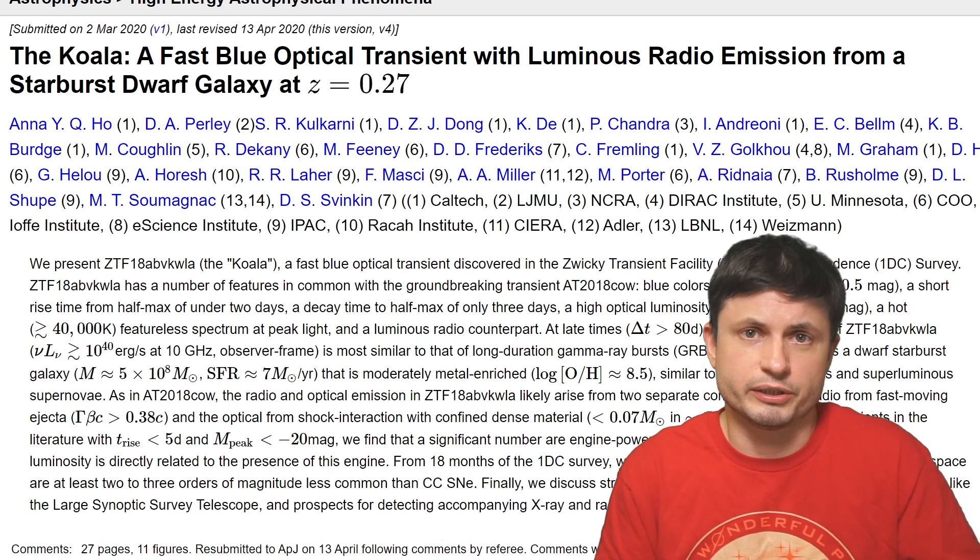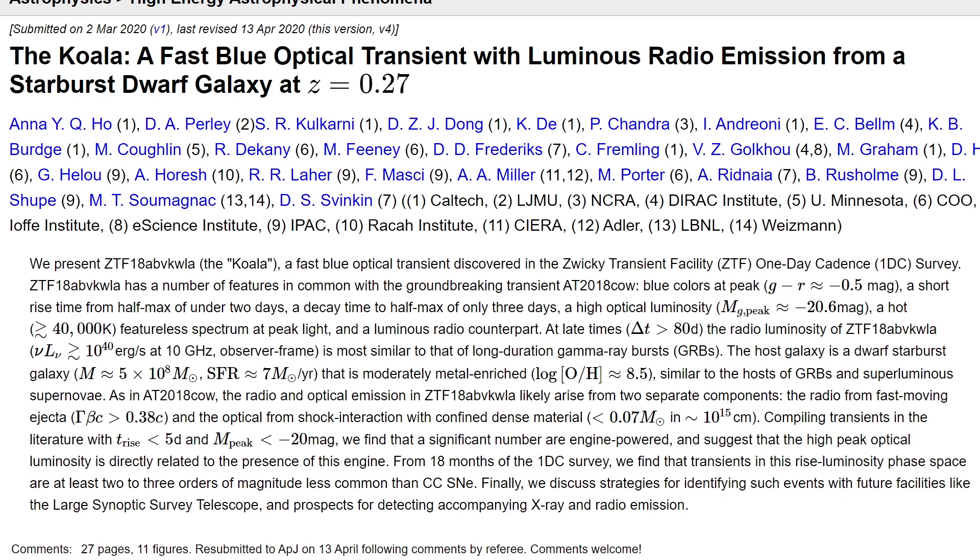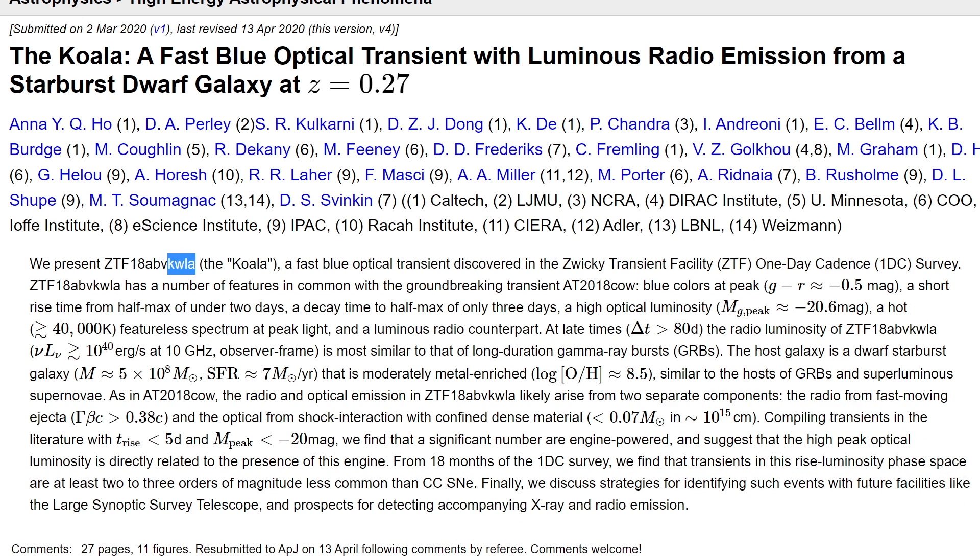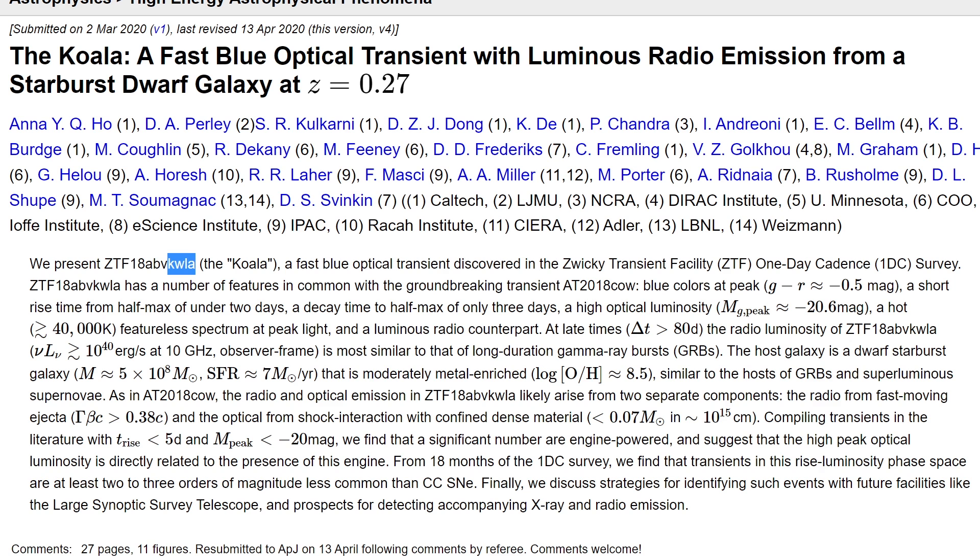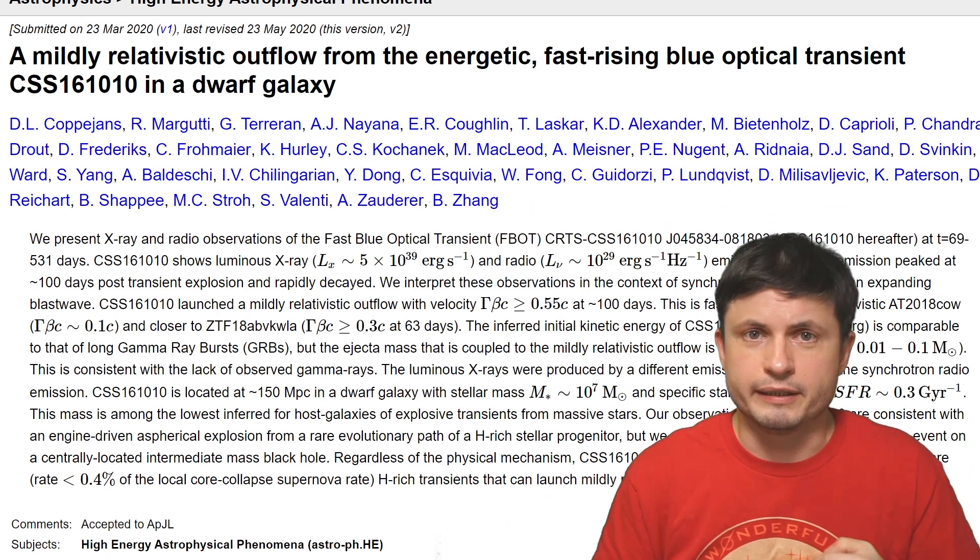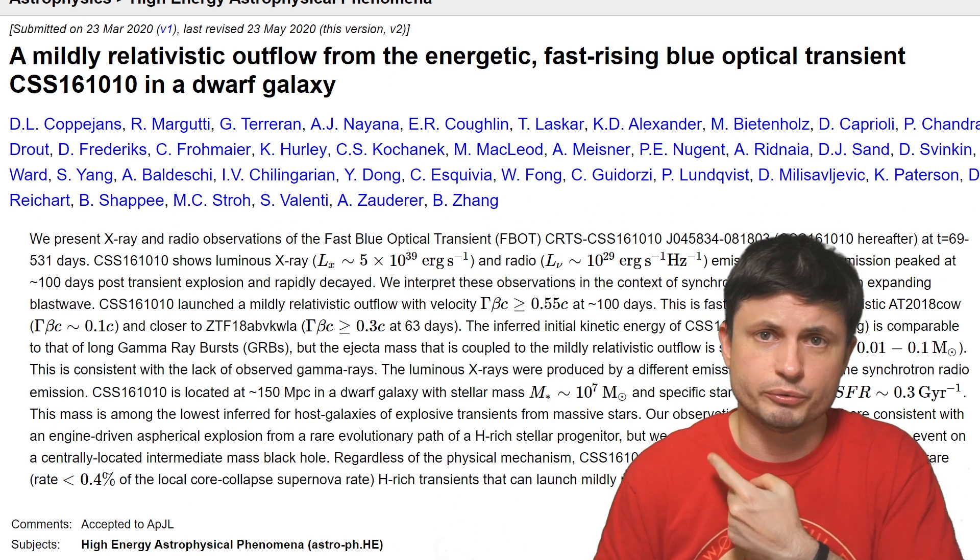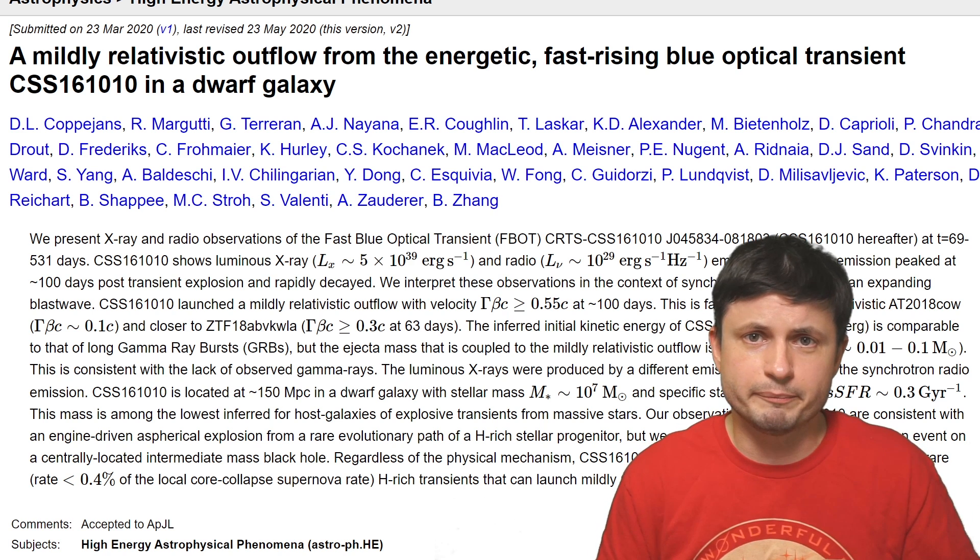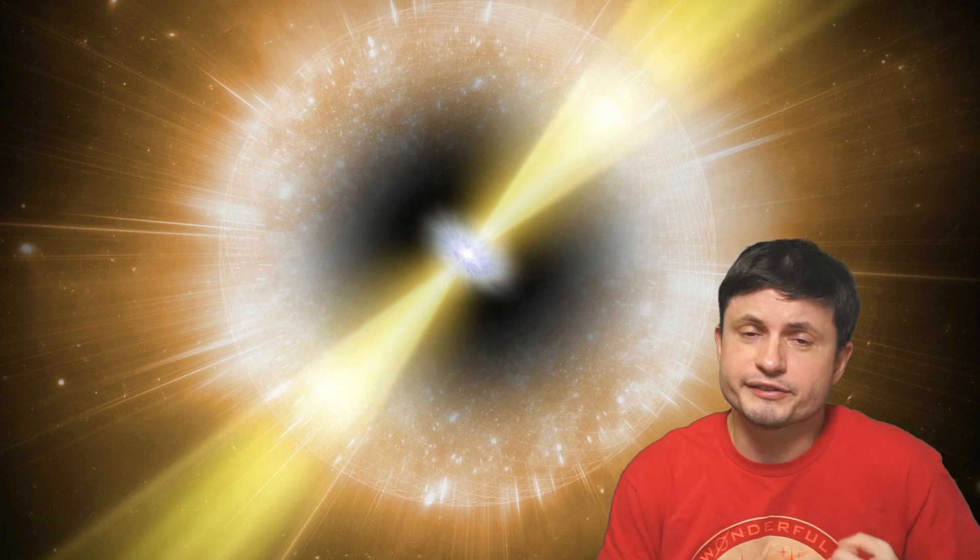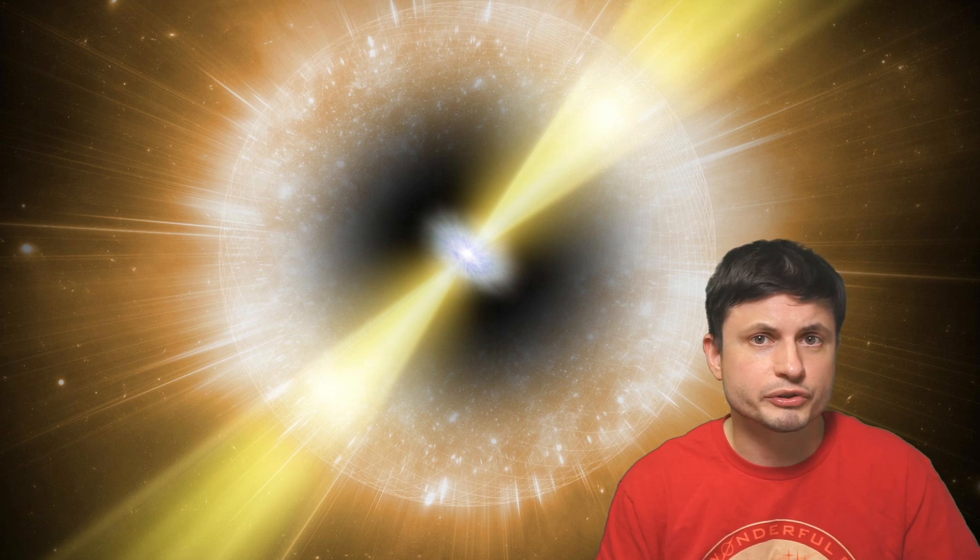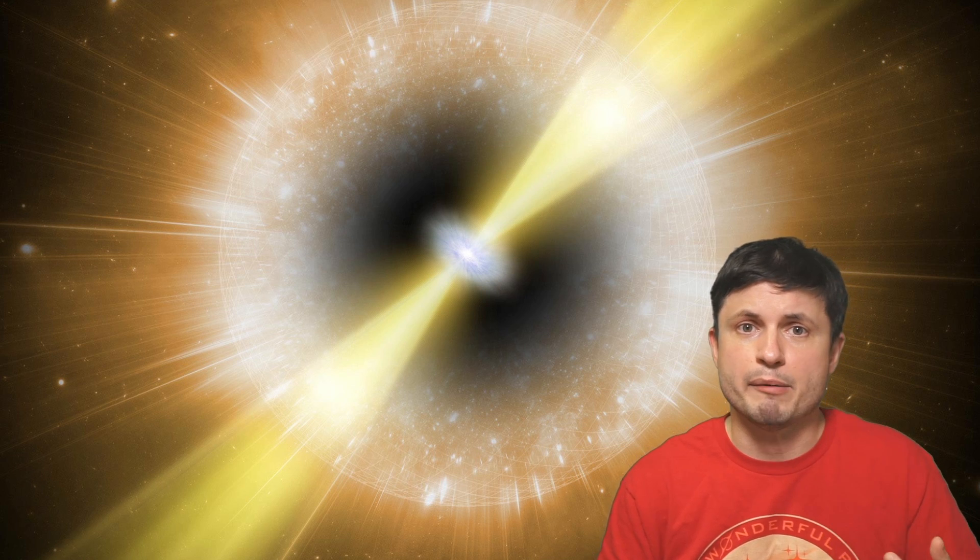So the other famous event here referred to as the Koala, once again because of these procedurally generated letters AT2018KLA, was actually the second such event. Then within a few months another one was found, but this time without a cool name. And now only a few months ago the scientists have identified the most powerful such event, and this one is referred to as the Camel.